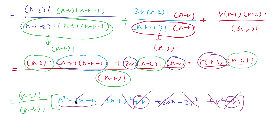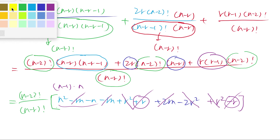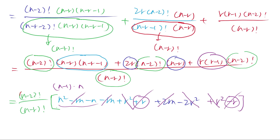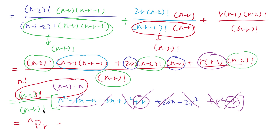What's n squared minus n? That's just n(n-1). And (n-2) factorial multiplied by (n-1) and n collapses to n factorial. So n factorial divided by (n-r) factorial is just nPr — which is the left-hand side we were trying to prove at the beginning.